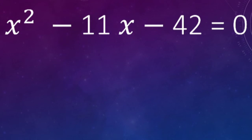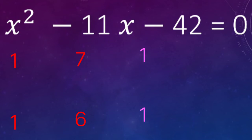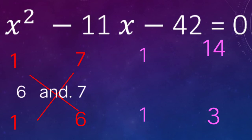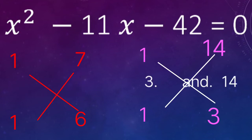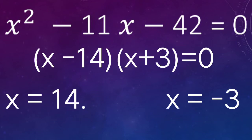For x² − 11x − 42, the coefficient of x² is 1, so we write factors as 1 and 1. For 42, options include 7 and 6, 14 and 3, or 2 and 21. We check: 1×6=6 and 7×1=7 — 6 and 7 can't make 11. In the next case, 1×3=3 and 14×1=14 — 14 and 3 make 11. Since we need minus 11, we use minus 14. So the answer is (x − 14) and (x + 3).